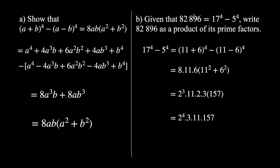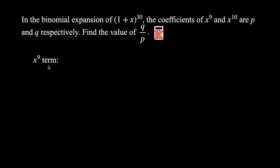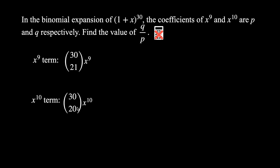That's a neat trick for finding prime factors of larger numbers using the binomial theorem. Next question: in the binomial expansion of (1 + x)^30, the coefficients of x^9 and x^10 are p and q respectively. Find the value of q/p without a calculator. The x^9 term is the 21st term, giving coefficient p = 30C21. The x^10 term gives coefficient q = 30C20.